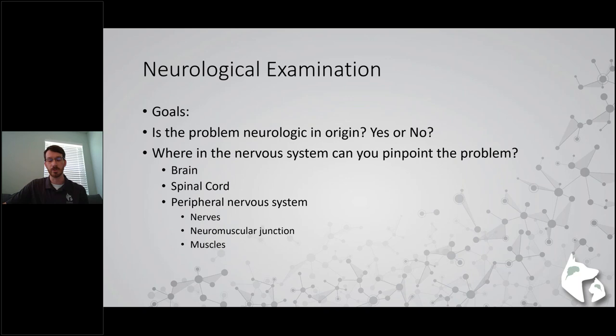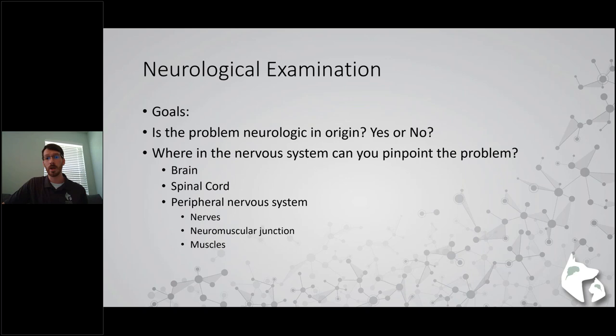There are two big goals when we do a neurological exam. The first one is: is the problem this patient is exhibiting neurologic in origin, yes or no? Because there can be metabolic diseases and even orthopedic diseases that look neurologic. After you assess that it's a neurological problem, the next question is: where in the nervous system can I pinpoint this problem? Is it somewhere in the brain, the spinal cord, the peripheral nervous system, the neuromuscular junction, or is it a primary muscle problem?